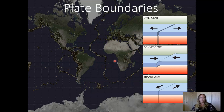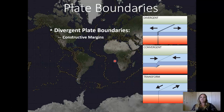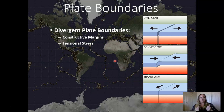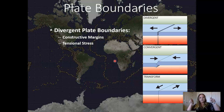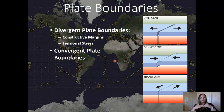We have three basic types of plate boundaries — the ways tectonic plates can interact: divergent, convergent, and transform. Divergent plate boundaries are called constructive margins because they are creating crust — creating new rock where two plates are pulling apart. This is under tensile stress, which pulls rocks apart. These are the convective cells coming up and pulling rocks apart at sea floor spreading ridges.